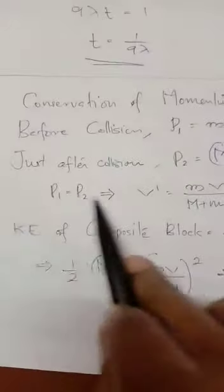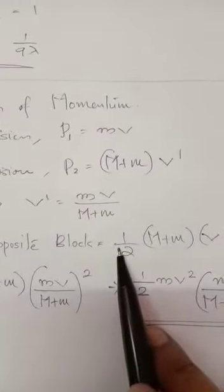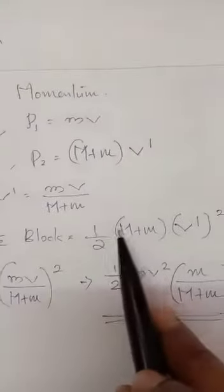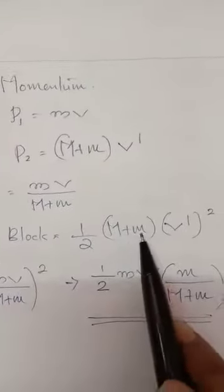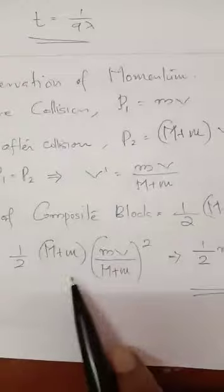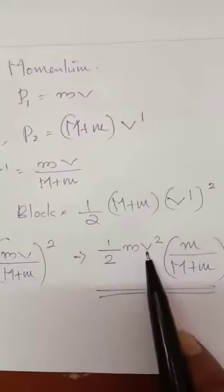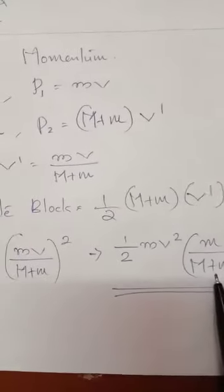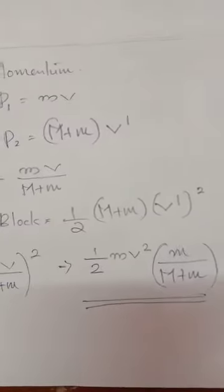This is composite system kinetic energy. How can I write? Half mv squared is kinetic energy. Composite system mass m plus M, velocity v dash. I will substitute this value. I will get half mv squared times m divided by m plus M.